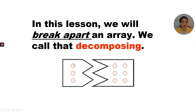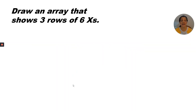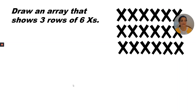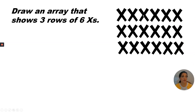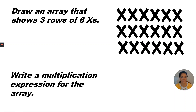In the illustration, we have one column with three in it and two more columns with three in it, so that would be a total of three times three. Now, draw an array that shows three rows of six x's — three rows with six in each row. So I have three rows of six x's. That would be three rows of six, or three times six.